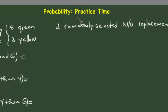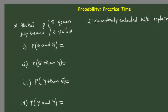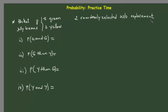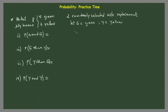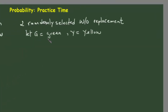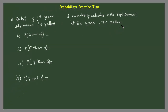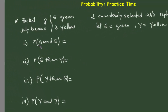Welcome back to our practice time. For our first example, we have a packet containing eight jelly beans: five are green, three are yellow, and two are randomly selected without replacement. We want to determine the probability of getting: a green and a green, a green then a yellow, a yellow then a green, and a yellow and a yellow. We let G equal green and Y equal yellow.